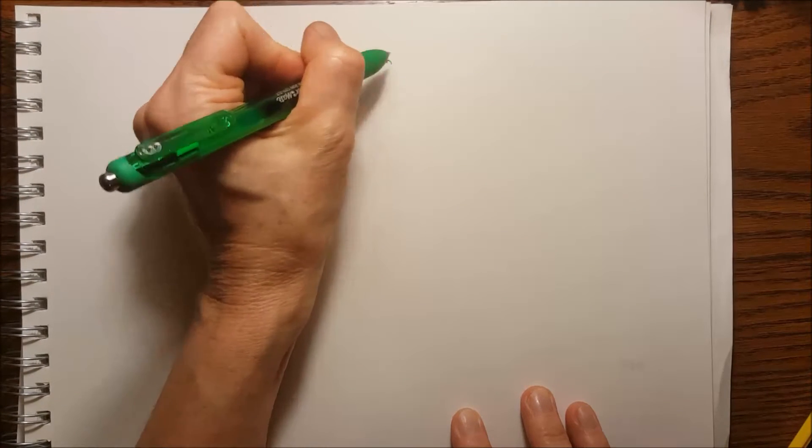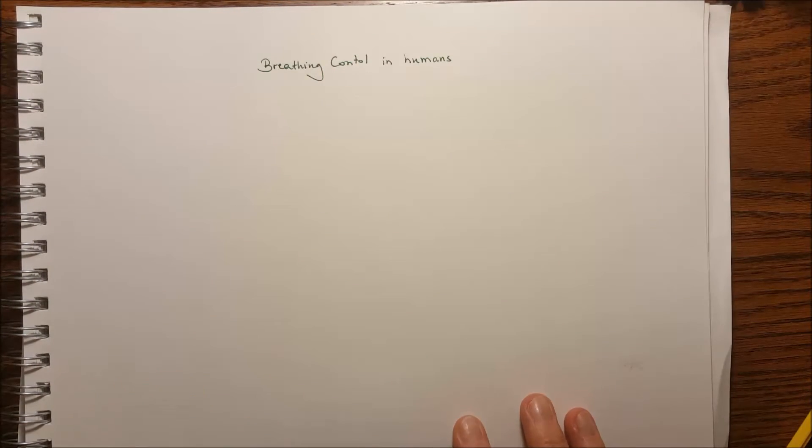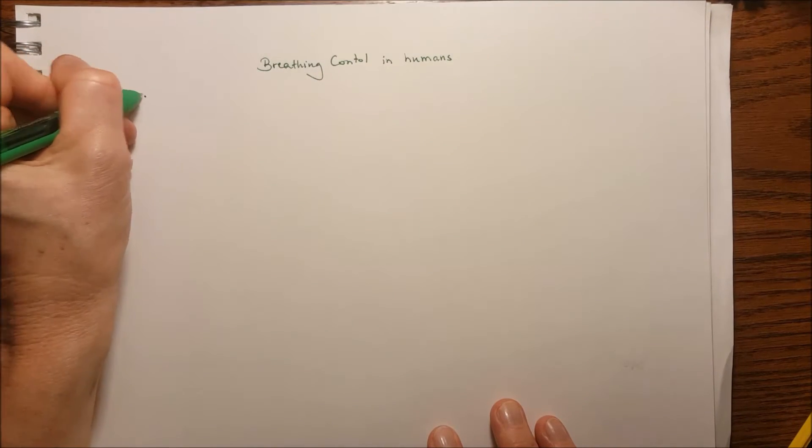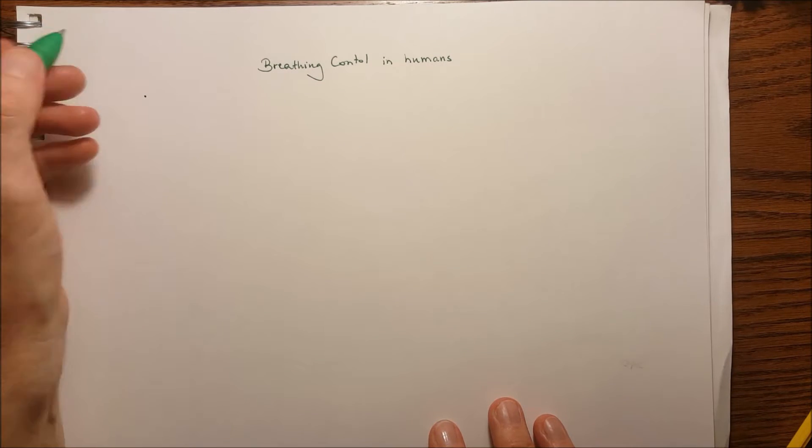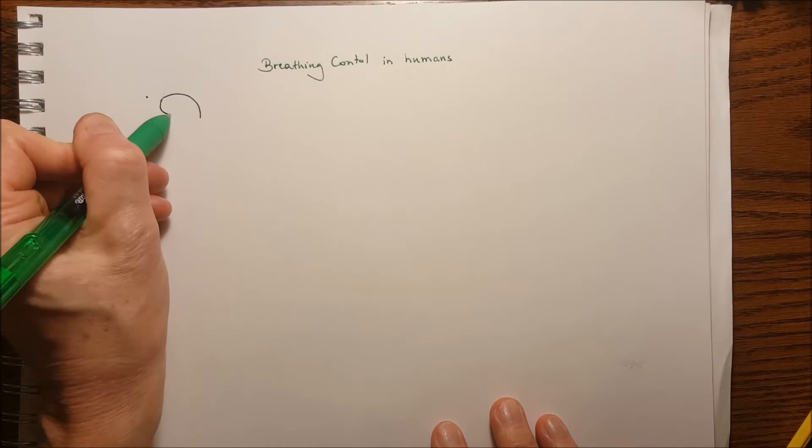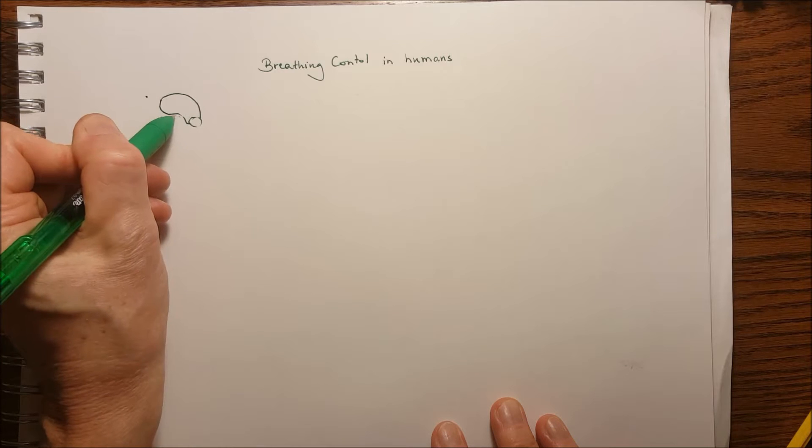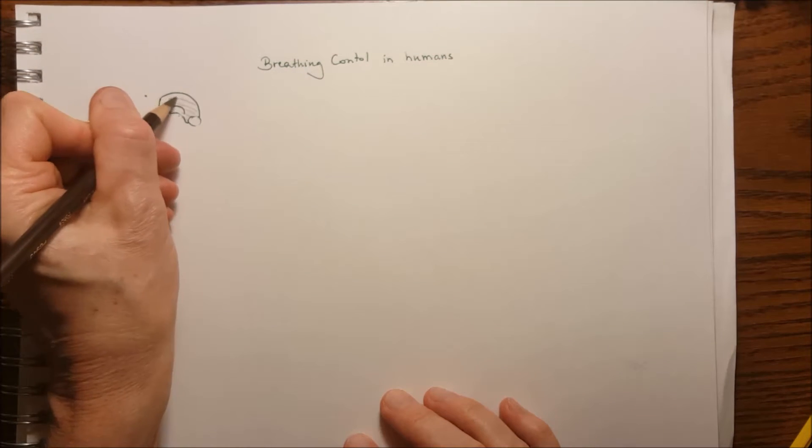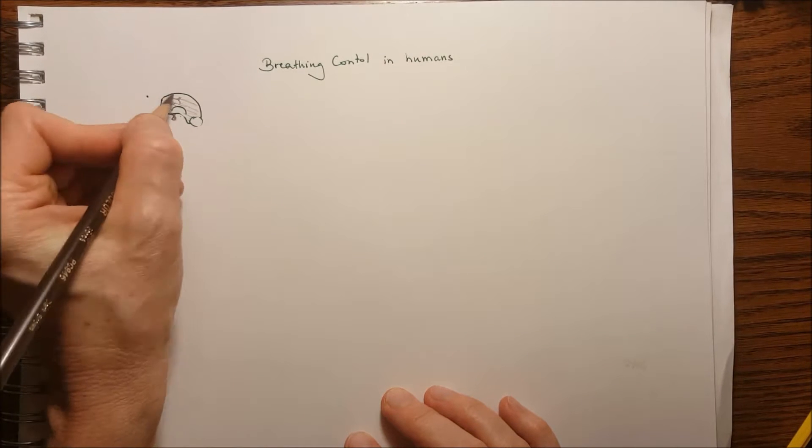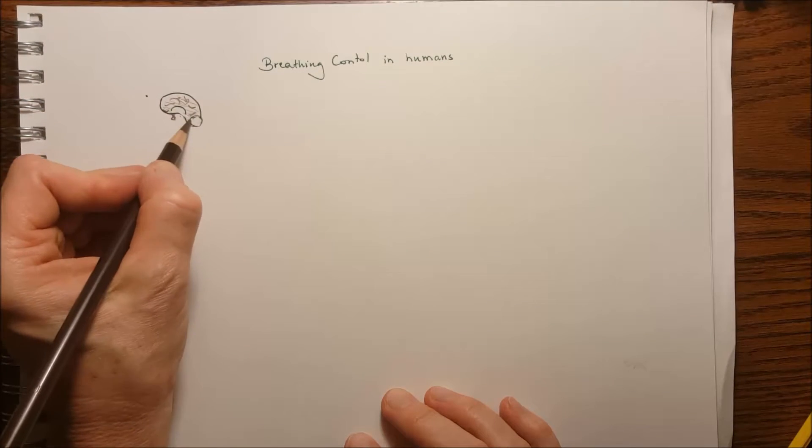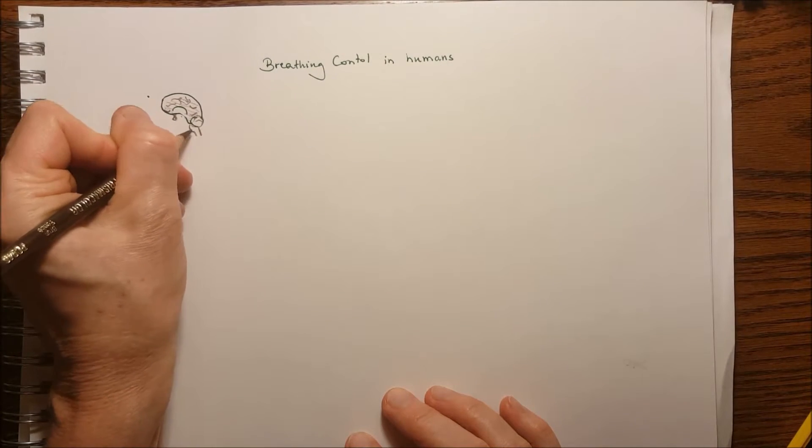Controlling of breathing in humans. In humans, mostly you do not think about that you need to breathe. Here is going to be the brain and parts of the brain: this is the cerebrum, the cerebellum, and the pons.